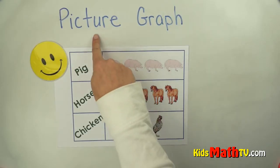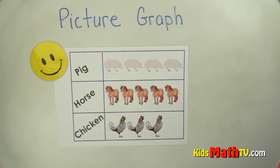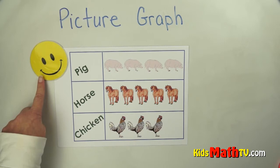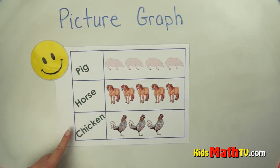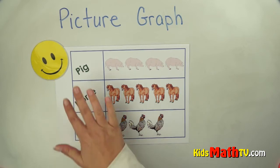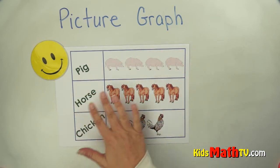In this lesson you will learn about reading a picture graph. Here is Susie. Susie went to the farm and she saw some animals. She saw some pigs, she saw some horses, and she saw some chickens. When she came back, she represented what she saw on this picture graph.